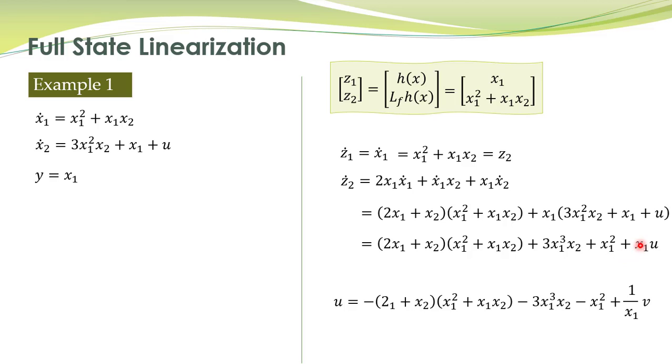Now we can select u to cancel out these nonlinear terms. So u is selected to be negative of this one, minus 3x1. This one, this will be canceled. Maybe here is some typo. Here it should be 2x1.